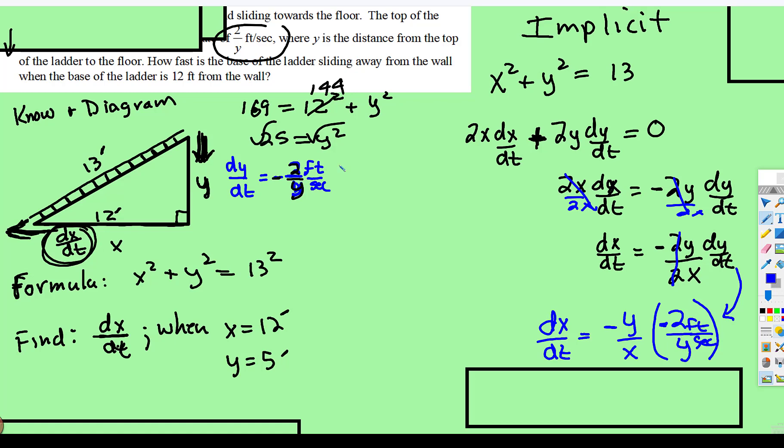Well, we know dy/dt. We were given that. Well, look at what happens. The ys cancel and now we have negative times negative is positive. So dx/dt is equal to positive 2 over x. And what do we have? Feet per second?